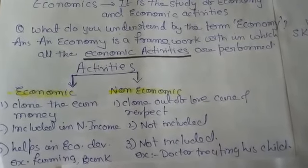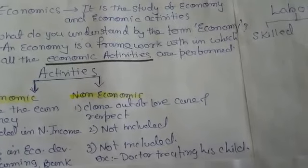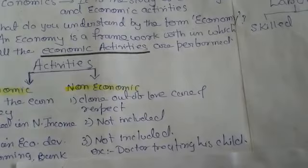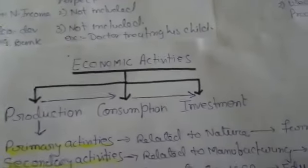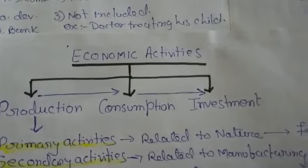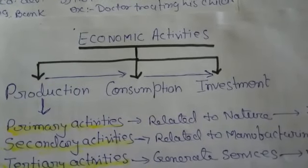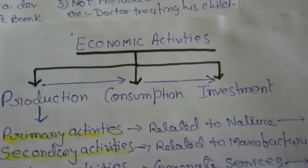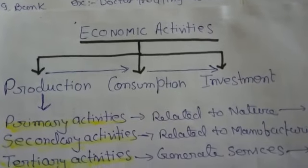Examples of economic activities are farming, banking, etc. Non-economic activities include a doctor treating his own child or a teacher teaching his own children. All those activities which are done to earn money are included in economic activities. Economic activities are classified as production, consumption, and investment.